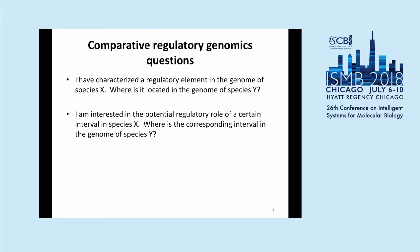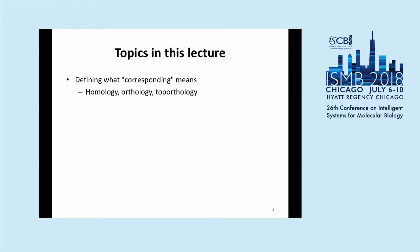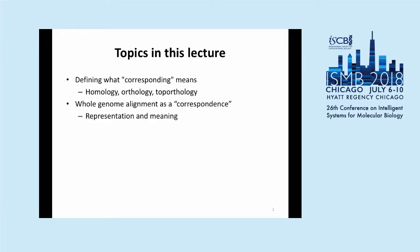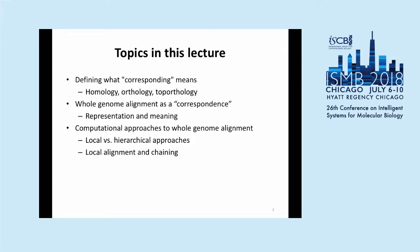That's where whole genome alignment comes in — it gets at those correspondences you need to answer these questions. The topics I'll cover today: first, what does 'corresponding' mean when finding corresponding elements between genomes? We'll review the concepts of homology, orthology, and a more specialized term I've introduced recently, top orthology. I'll describe how whole genome alignment is a correspondence between genomes, and cover the representation and meaning of whole genome alignments. Lastly, I'll review computational approaches, positioning them into broad categories of local and hierarchical, and discuss local alignment and chaining techniques.